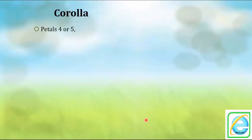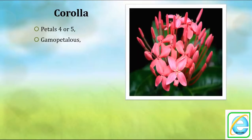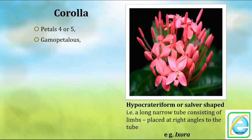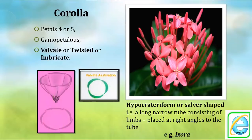The corolla consists of four or five petals, which are gamopetalous — united. The form is hypocratiform or salver shape: a long tube-like structure with limbs at right angles to the long tube — example is Ixora. Three kinds of aestivation are found: valvate (petals just touching), twisted (petals overlapping to one side), and imbricate (one petal completely inside, one completely outside, and three overlapping each other).